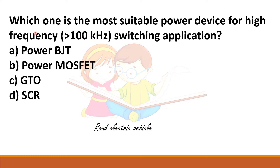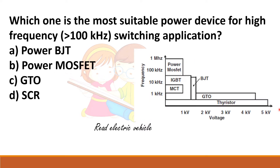The first question is: which one is the most suitable power electronic device for high frequency application? If high frequency application is specified, the answer is always power MOSFET. From the diagram drawn between frequency and voltage, MOSFET has the highest frequency. The limitation of MOSFET is that it can be used only for low voltage applications.